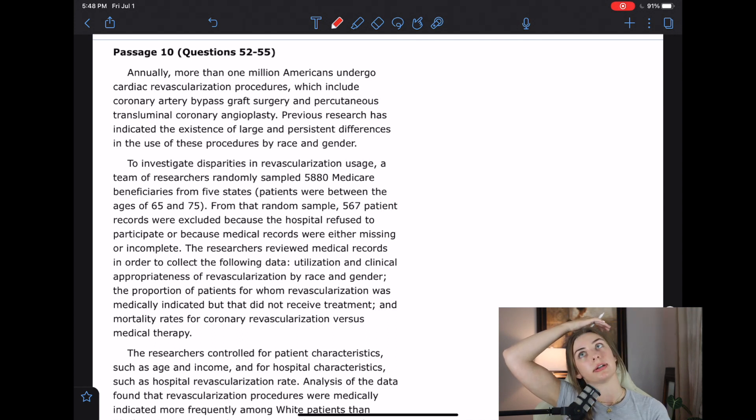I probably could flowchart something on this but I'm just not overwhelmed yet and so I'm going to wait until I get overwhelmed. I'm sure it's coming. To investigate disparities in revascularization usage, a team of researchers randomly sampled 5880 Medicare beneficiaries from five states. Patients who are between the ages of 65 and 75. From that random sample, 567 patient records were excluded because the hospital refused to participate or because medical records were either missing or incomplete.